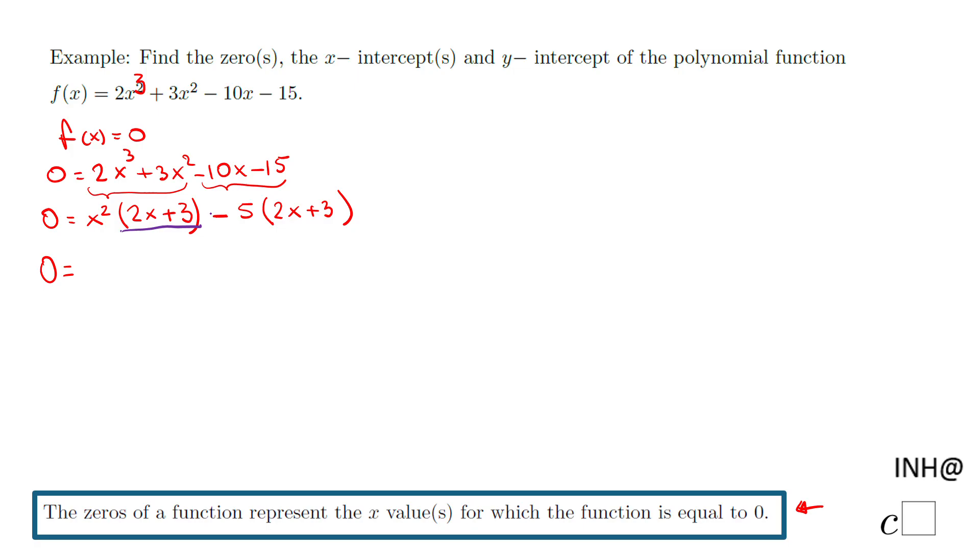Now we notice we have a common factor, 2x + 3. So that will be our first factor (2x + 3) and then (x² - 5). Now if we have this factored form equal to 0, we can set each factor to 0. For 2x + 3 = 0, we have 2x = -3, and dividing by 2, we get x = -3/2. So one zero is -3/2.